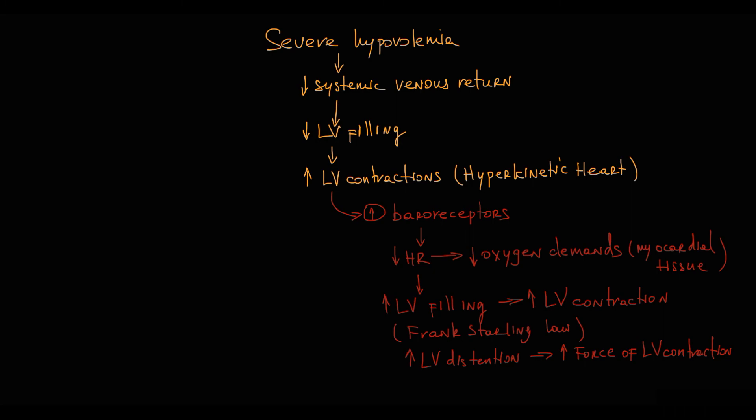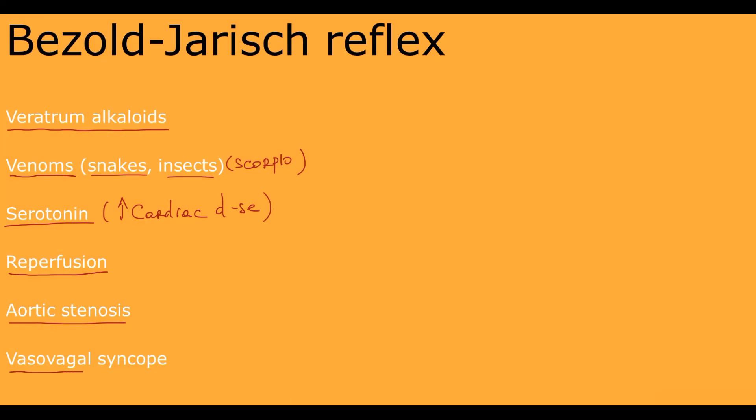Also, Bezold-Jarisch reflex is considered as a mechanism of other vasovagal syncope symptoms. The possible mechanism is that sudden emotional stress or acute pain, for example, activates specific areas in cerebral cortex.